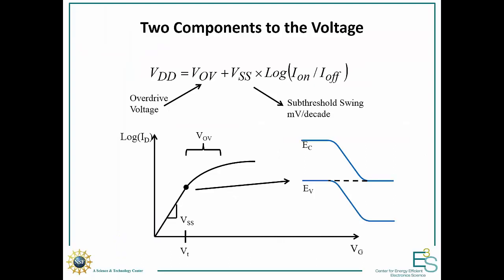First I want to look at what is the total voltage required to operate the switch. We have our subthreshold voltage, which represents the steepness of the device below threshold — when our bands aren't overlapping — and that's where the density of states switching and barrier thickness modulation matters. The voltage required is just the steepness times the log of the on-off ratio we want. However, there's also an additional component: the overdrive voltage, which is the extra voltage we apply beyond threshold to get the full conductance we want, and we need to engineer this as well.